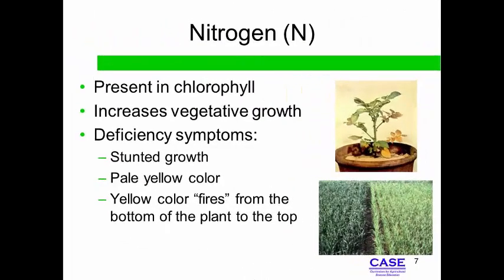Nitrogen, or N, gives green plants their bright green color and is one of the most used of all nutrients. Nitrogen influences the development of proteins and is essential for cell division, photosynthesis, vitamins, use of carbohydrates, and the energy reactions in plants.